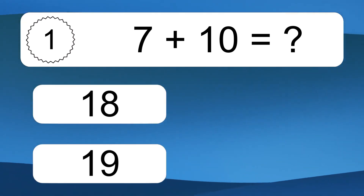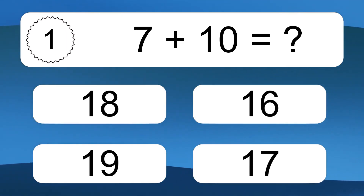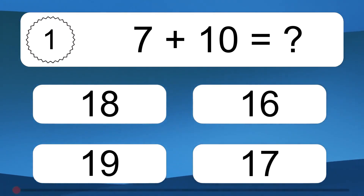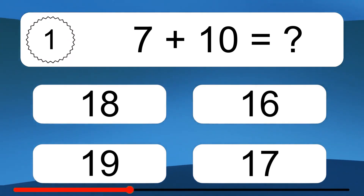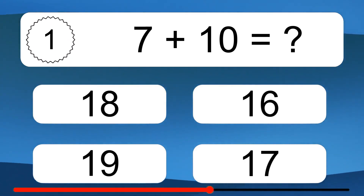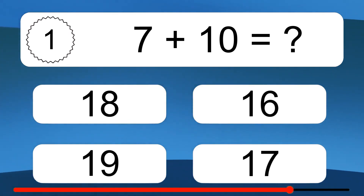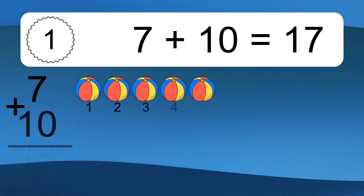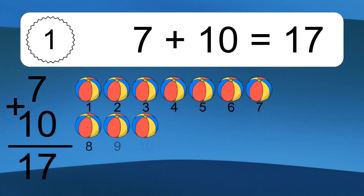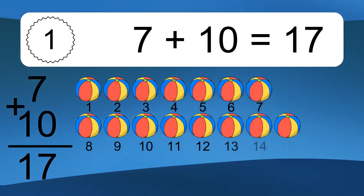7 plus 10 equals what? 7 plus 10 equals 17.